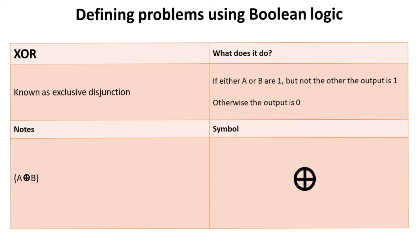With exclusive OR, we use the OR symbol of a plus, but enclose it in a circle. This reads A exclusive OR B.